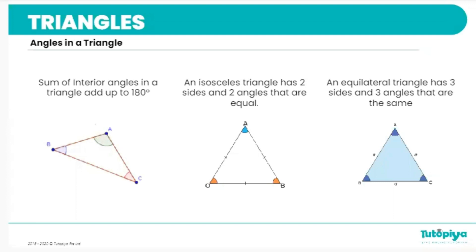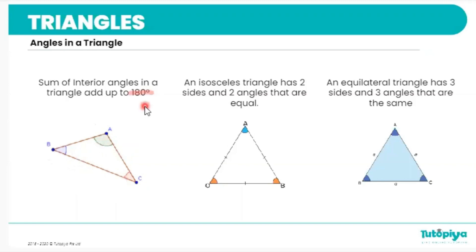To begin with, we are going to focus on the different angles that we can see in triangles. When we have any triangle, you need to remember that if you add up all of their angles, they are always going to give us a total of 180 degrees. So in this triangle, if I add up angle A, angle B, and angle C together, we get a total of 180 degrees.